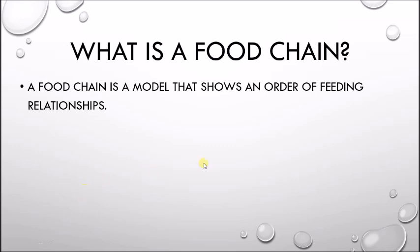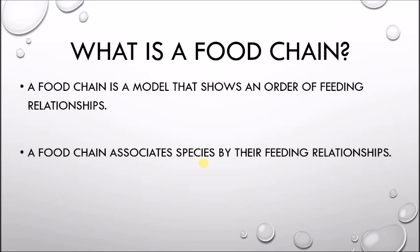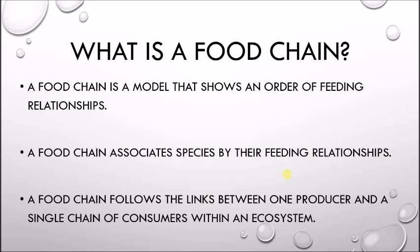Unlike a food web, food chains only show the basics. They show general associations between species and how they're feeding on each other. Usually a food chain is represented by three or four steps or links between organisms in an ecosystem, starting with a producer and then moving from one consumer to the next. Producers are making the energy, and then that energy is passed on through eating from one consumer to the next. So let's look at an example and see how the food chain can be used as a foundation for the food web.